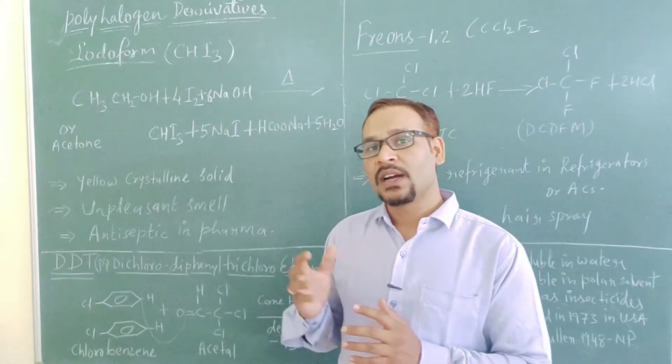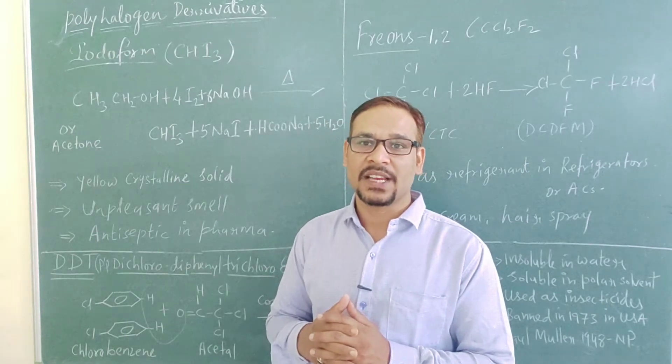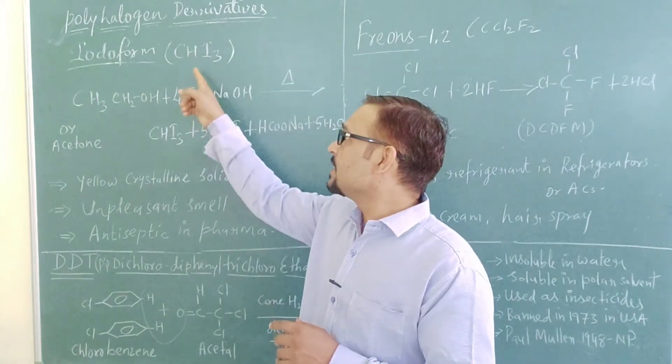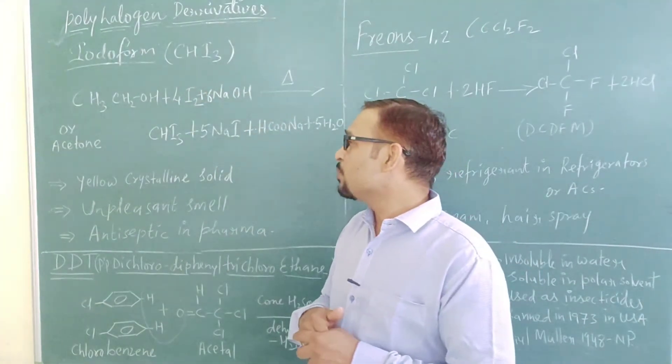It is one of the derivatives of haloform. Haloform's formula is CHX3. When we replace X with iodine, we will get iodoform CHI3. So CHI3 is the formula of iodoform.